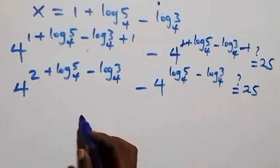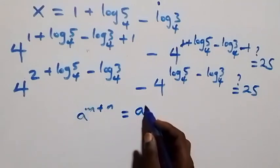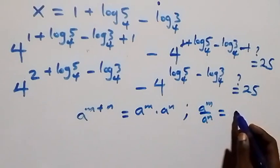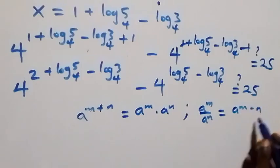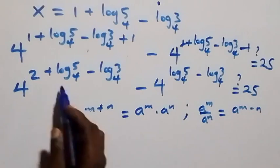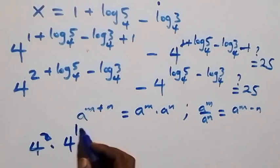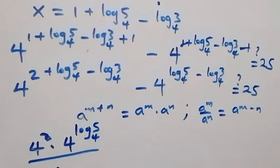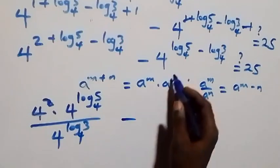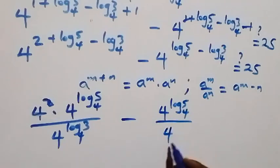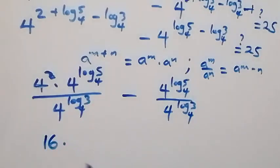From the law of indices, a raised to power n plus n equals a raised to power n times a raised to power n, and a raised to power n over a raised to power n equals a raised to power n minus n. Applying these, the first term becomes four squared times four raised to power log 5 base 4, divided by four raised to power log 3 base 4, and the second term is four raised to power log 5 base 4 divided by four raised to power log 3 base 4.